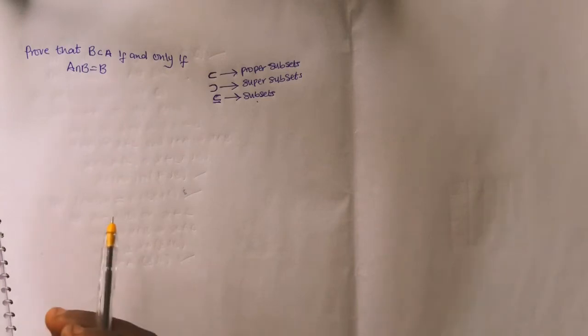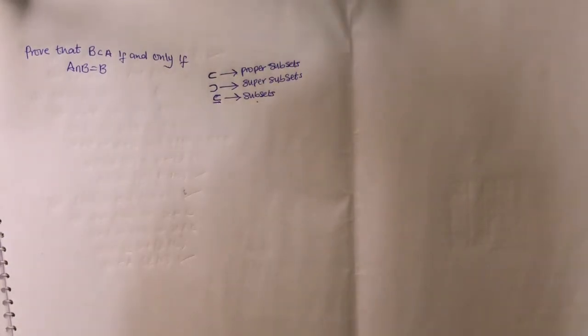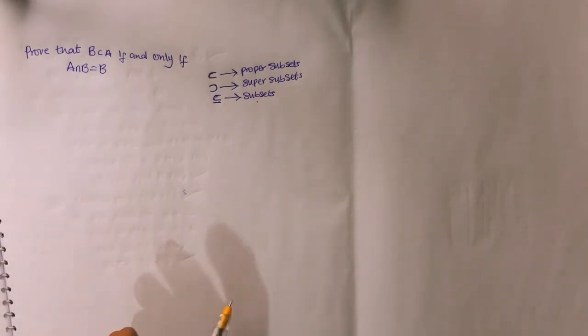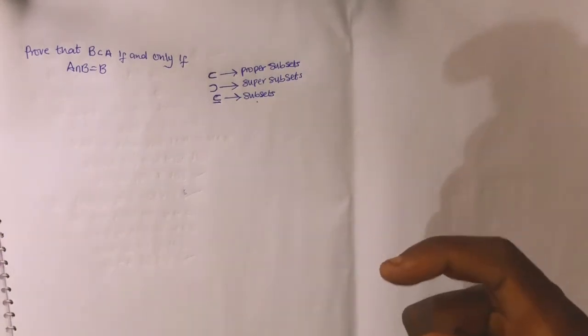Now, in this case we are asked to prove that B is a proper subset of A if and only if — and that is a powerful phrase in mathematics, 'if and only if' — A intersection B equals B. How am I going to prove this? I can prove this using a general approach, but the simplest way is to prove it using the set of real numbers so that I won't get confused.